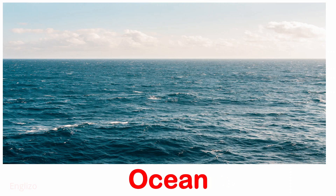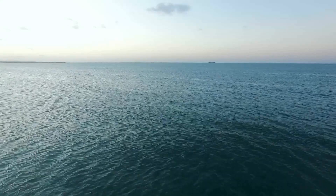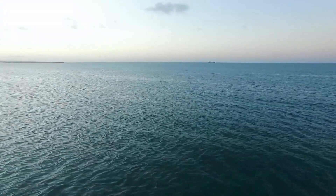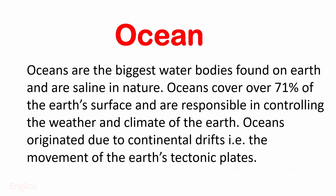Ocean: Oceans are the biggest water bodies found on earth and are saline in nature. Oceans cover over 71% of the earth's surface and are responsible for controlling the weather and climate of the earth. Oceans originated due to continental drift, that is, the movement of the earth's tectonic plates.